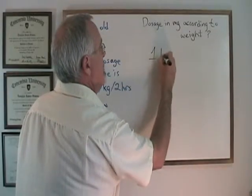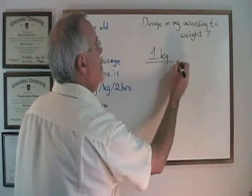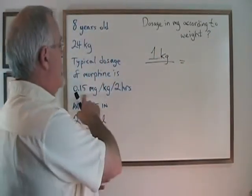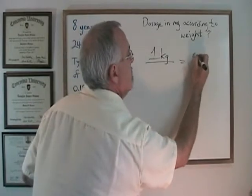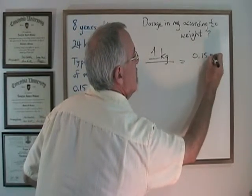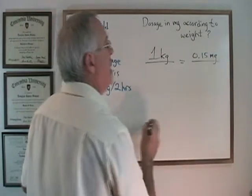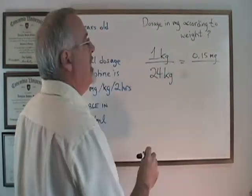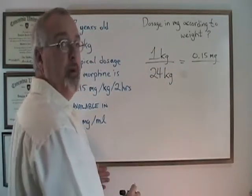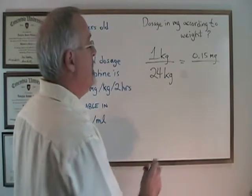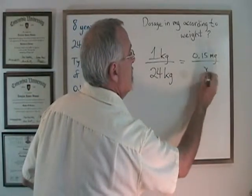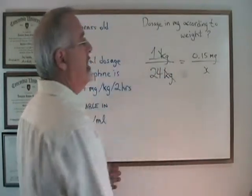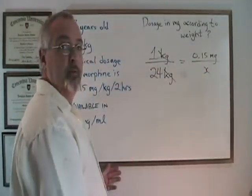One kilogram requires 0.15 milligrams. So if we have 24 kilograms, how many milligrams of the medication do we need? The kilograms cancels on the left side, which means our answer is going to be in milligrams.